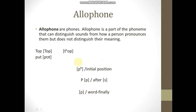This is the complementary distribution of the phoneme P. P with aspiration occurs in word-initial position, P after S occurs in word-medial position, and P in word-final position is not aspirated. So: P in the first position is aspirated, P in the middle position is not aspirated, and P in word-final position is not aspirated either.